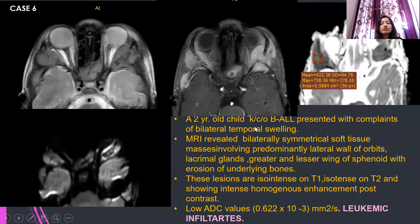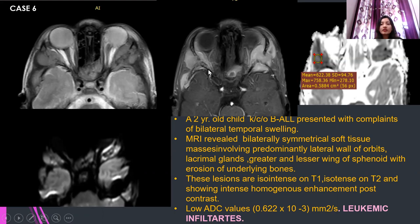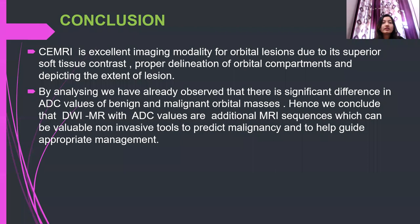Case 6: a 2-year-old child with a known case of B-cell leukemia presented with bilateral temporal swelling. MRI revealed bilateral symmetrical soft tissue masses on the lateral orbit involving the lateral wall, causing erosion of the underlying bones. The lesion was isointense on T1 and T2, showing diffusion restriction with a fall in ADC of 0.622 × 10⁻³ mm²/s. These were cases of leukemic infiltration.